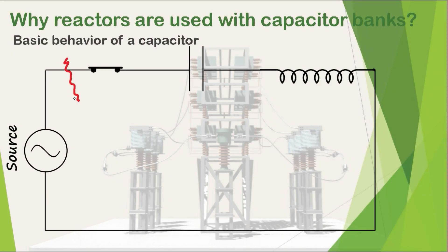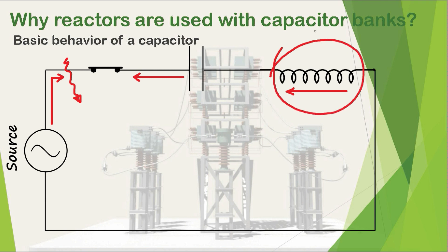Suppose a fault occurs, so current will try to come from the system as well as from the fully charged capacitor. Since the capacitor is in a charged condition during the fault, it will try to discharge very rapidly due to the low-impedance fault path. But due to the presence of this reactor in the circuit, the discharging current during the fault will be limited, which will save the capacitor bank.